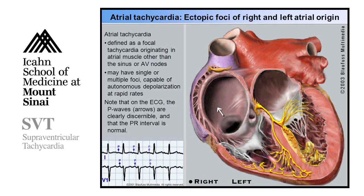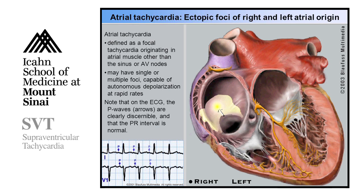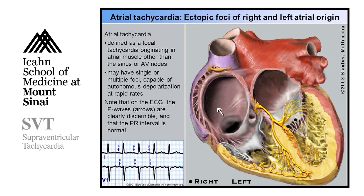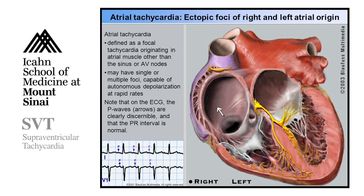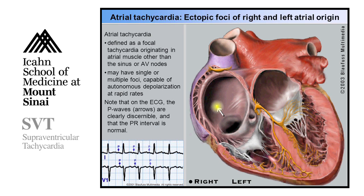The third major type of SVT is called ectopic atrial tachycardia. This represents a focus anywhere in the top chambers of the heart where there's abnormal tissue that fires rapidly, causing an abnormal heartbeat. How do we eliminate this? We manipulate a catheter to that focus and deliver energy to cauterize the tissue. So these are the different approaches that we use to treat SVTs.